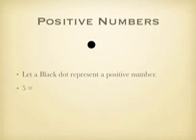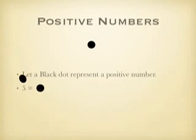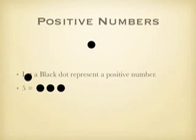Positive Numbers. Let a black dot represent a positive number. So if you have 5, that would be represented by 1, 2, 3, 4, 5.